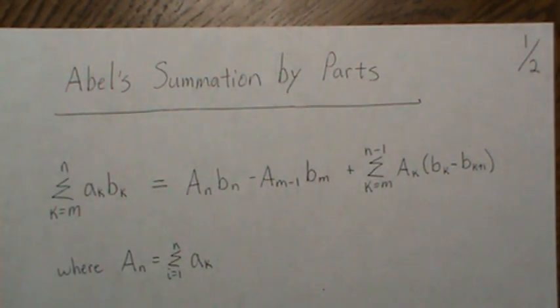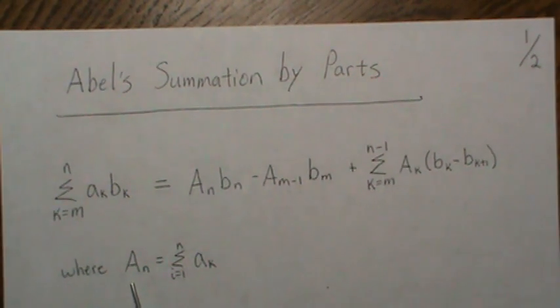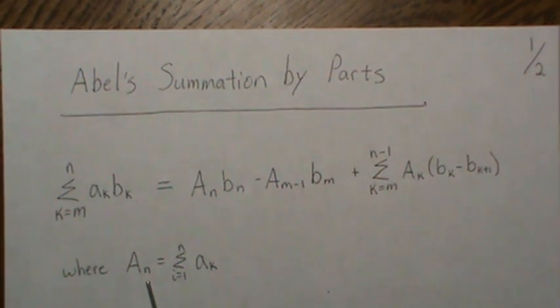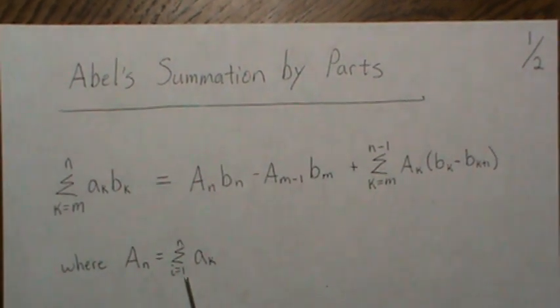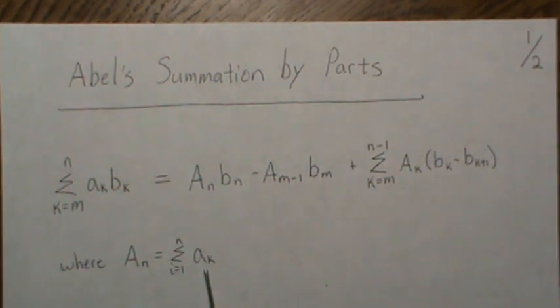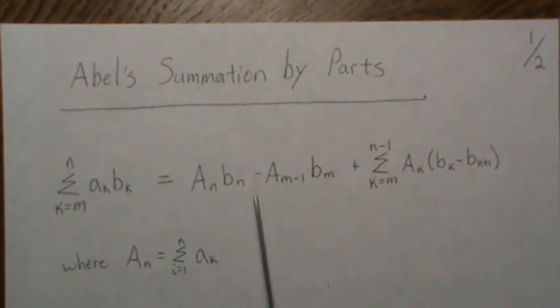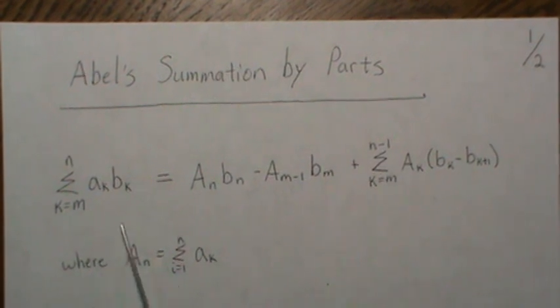So that's what we're going to look at today. Here we're going to let capital A_N be the cumulative sum from 1 to n of little a_k.